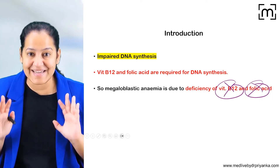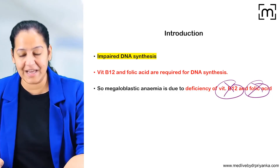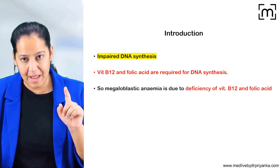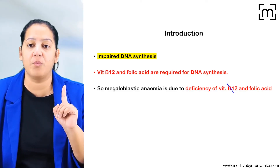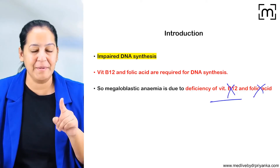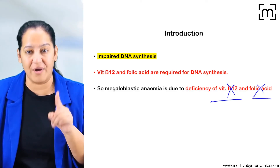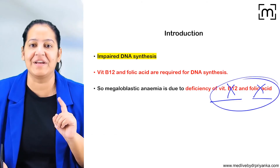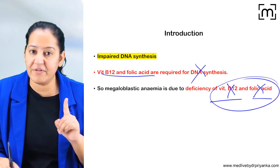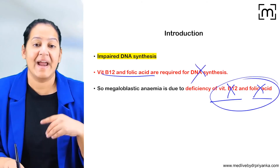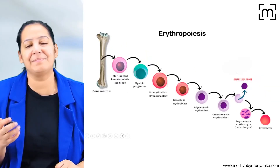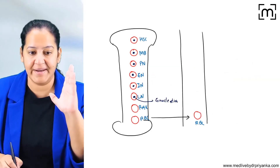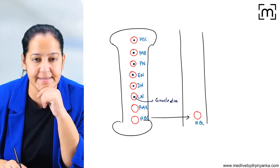To summarize: megaloblastic anemia is anemia that occurs due to deficiency of vitamin B12, folic acid, or both. When these are deficient, DNA cannot be synthesized. Since DNA cannot form, the precursor cells cannot develop properly, and the person develops anemia. This is the complete overview and introduction of megaloblastic anemia.